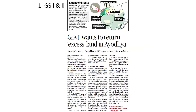The central government has requested the Supreme Court to grant permission to return the excess land acquired by the government near the disputed Ayodhya site. On the 6th of December 1992, radical Hindutva outfits brought down the Babri Masjid at Ayodhya, leading to widespread communal riots across the country. This event was a blot on Indian democracy, and the Ayodhya dispute has acquired not just religious and communal overtones but also political significance.